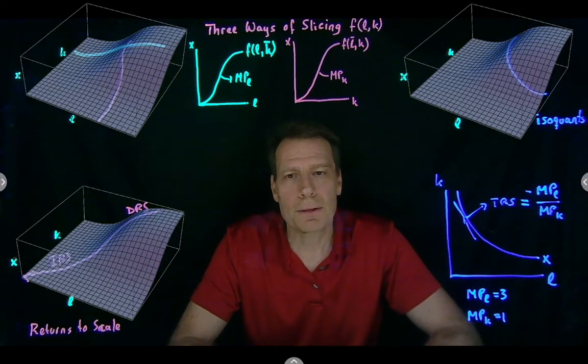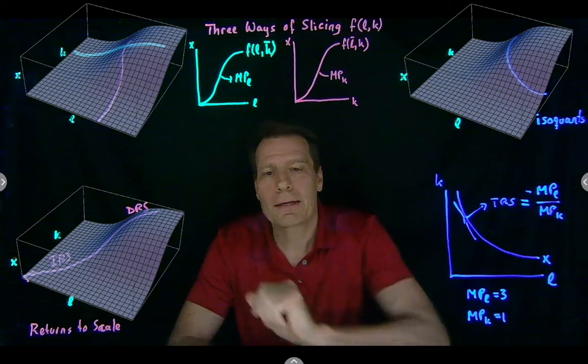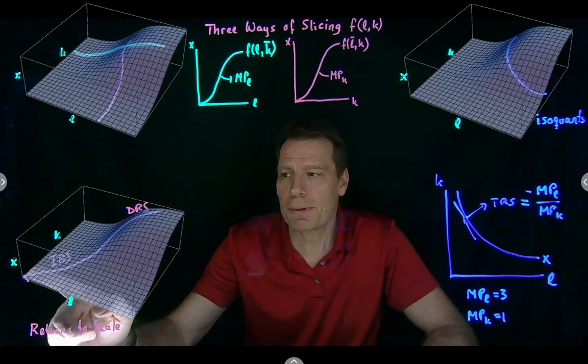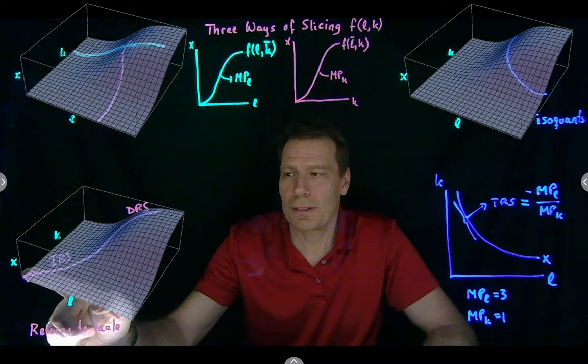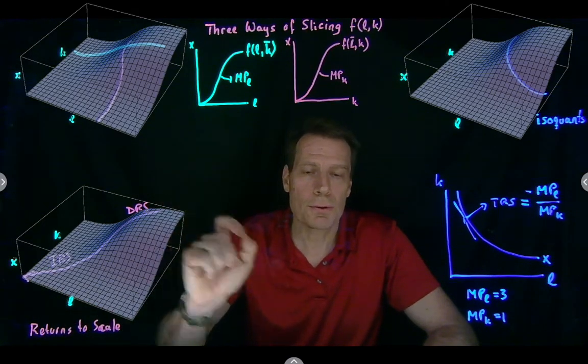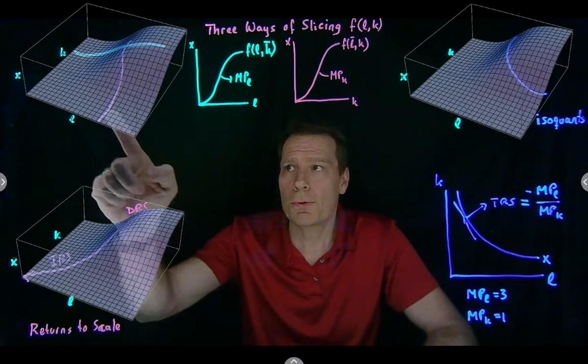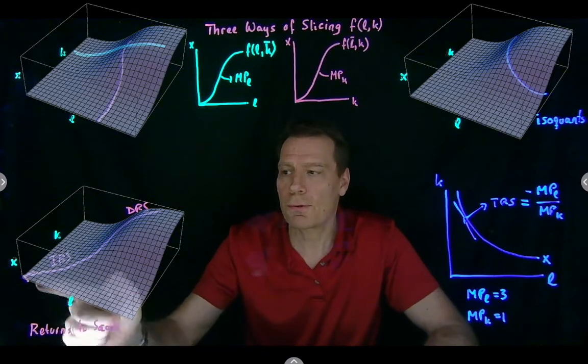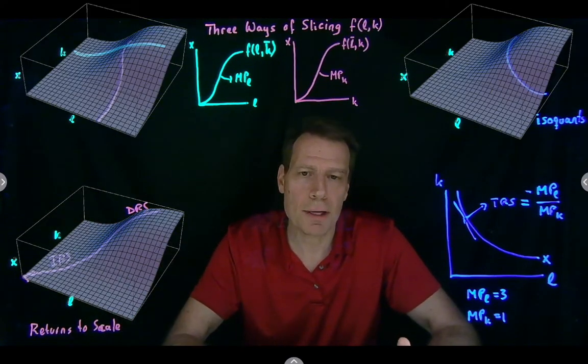We didn't talk about what the slices look like if we hold good one fixed or good two fixed, and we didn't talk about what happens as we vary both good one and good two. And the reason for that is that both of these are vertical slices. They rely on the thing on the vertical axis being objectively measurable.